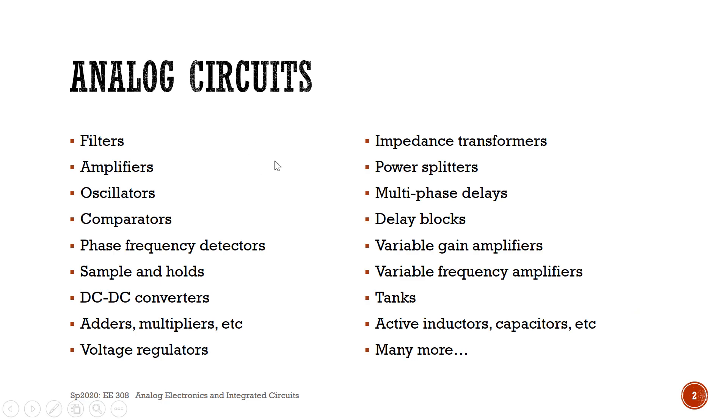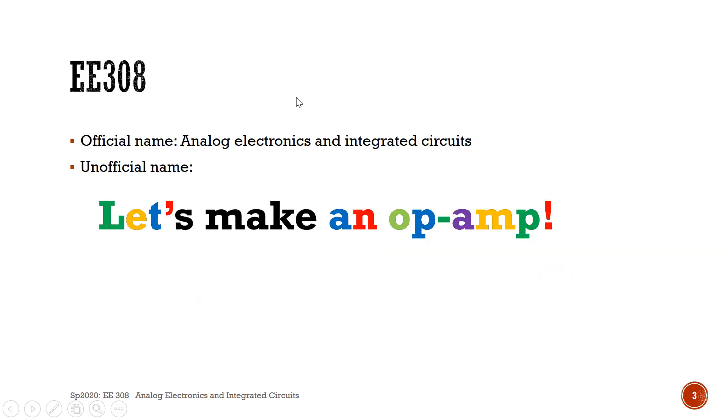When there's all these other analog circuits—in analog circuits there's filters, amplifiers which we are building, oscillators, analog comparators, phase frequency detectors. If you've done anything with radios or receiving signals, whenever you have a PLL, something that needs to synchronize a clock, sample and holds, DC-DC converters, adders, analog adders and multipliers, voltage regulators.